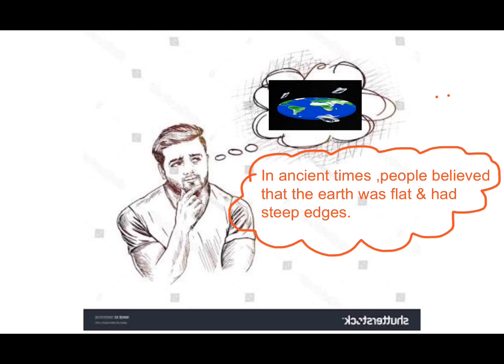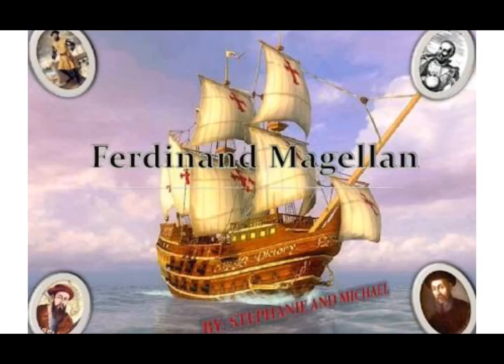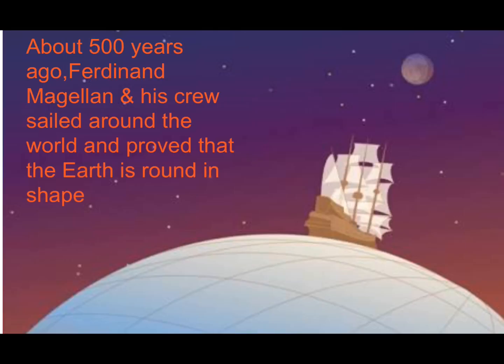In ancient times, people believed that the Earth was flat and had steep edges. But about 500 years ago, Ferdinand Magellan and his crew started from Spain on a long sea journey. They kept sailing in one direction, and after nearly three years, they reached the same place from where they had started. This proved that the Earth is round like a ball.